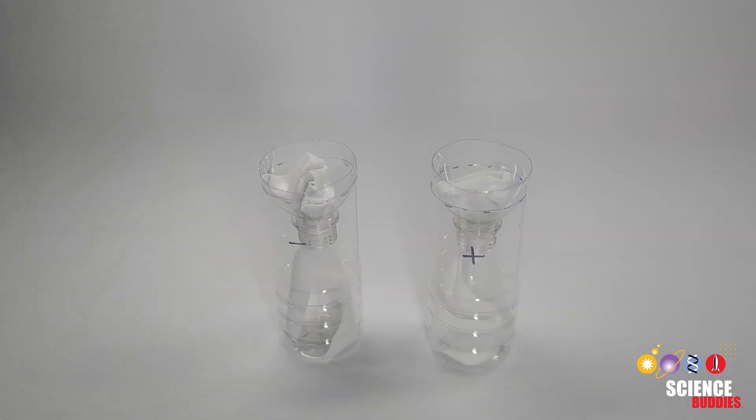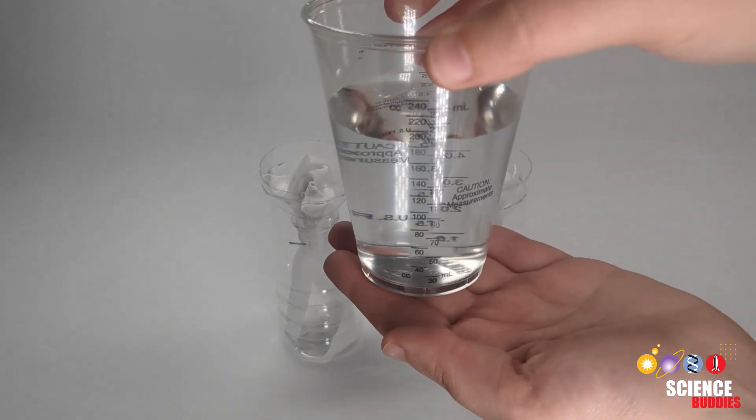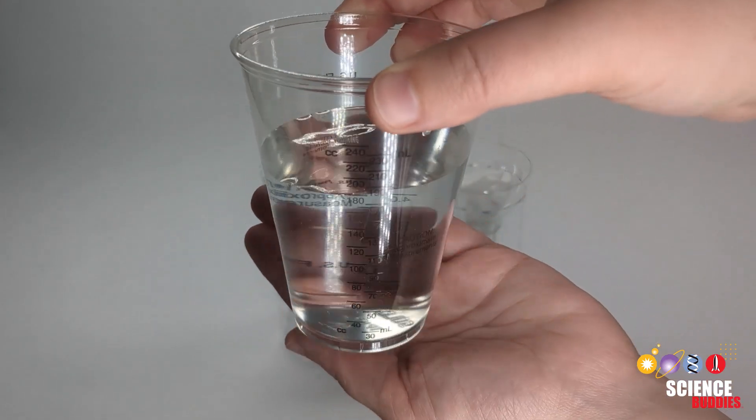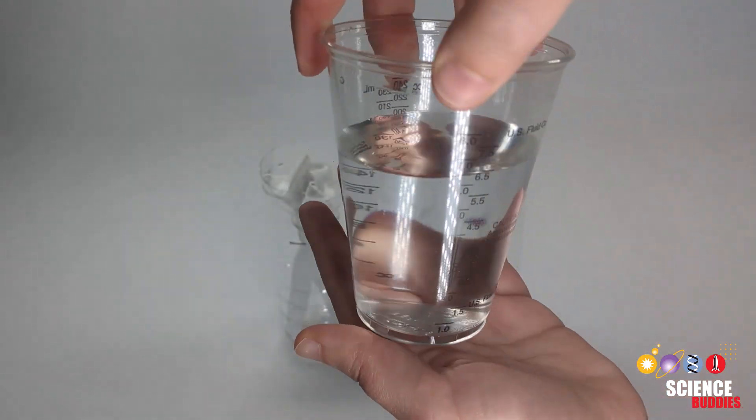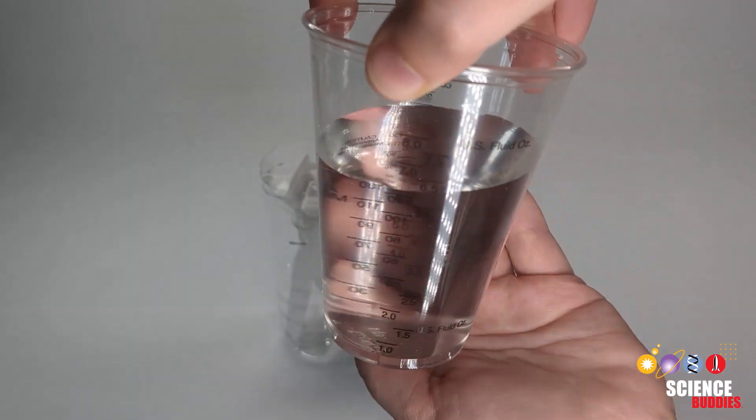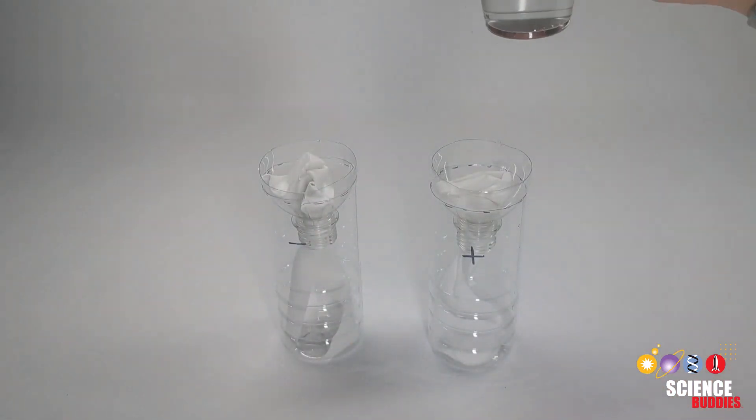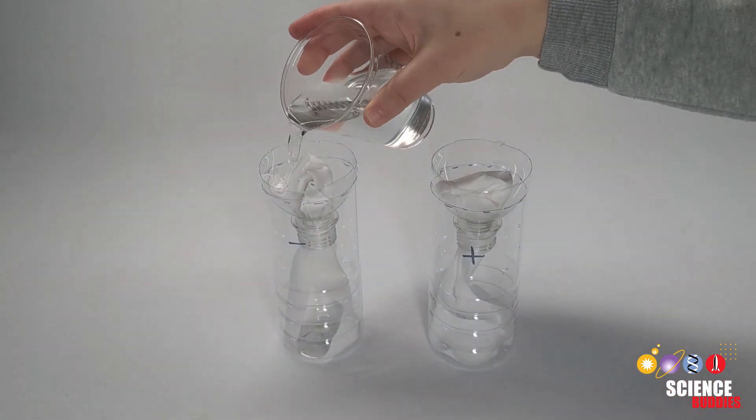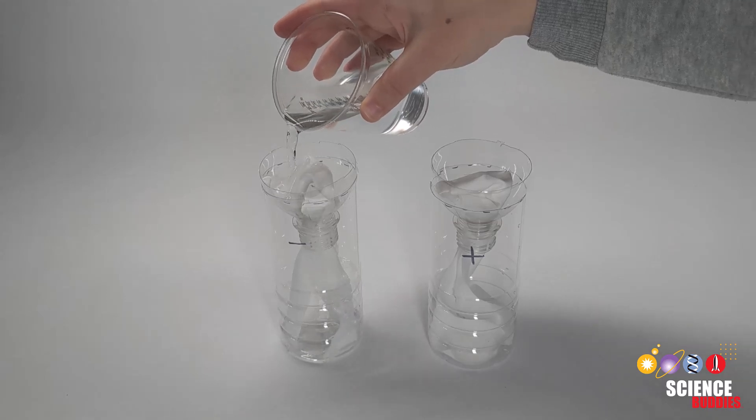Prepare your no nutrient negative control bottle by measuring 190 milliliters or 6.5 fluid ounces of water per bottle. Pour the 190 milliliters of water over the top of the knot allowing it to wet the entire cotton wick and trickle down into the bottom of the apparatus.